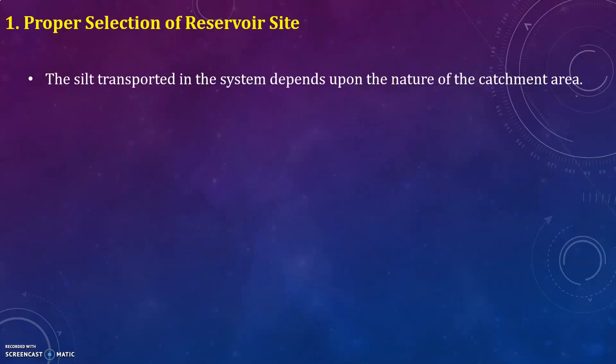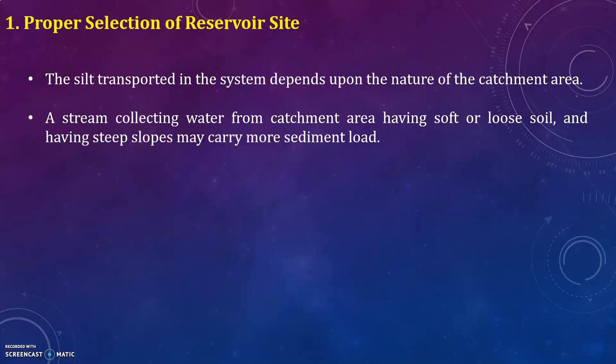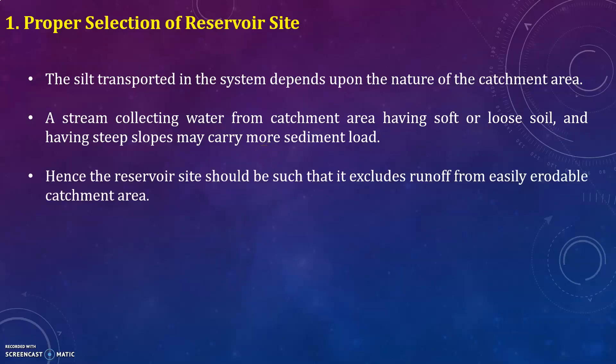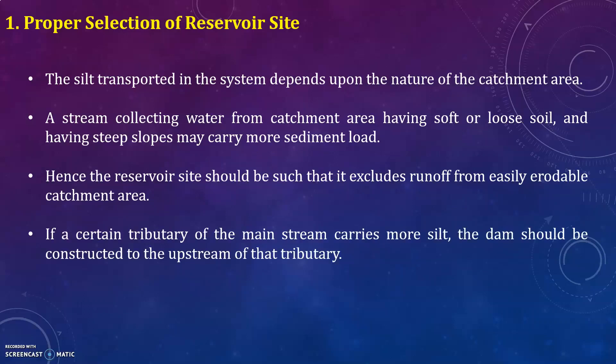The first method is proper selection of reservoir site. The sediment transported in the system depends upon the nature of the catchment area. A stream collecting water from a catchment area having soft or loose soil and steep slopes may carry more sediment load. Hence, the reservoir site should exclude runoff from easily erodable catchment areas. If a certain tributary of the main stream carries more silt, the dam should be constructed upstream of that tributary.